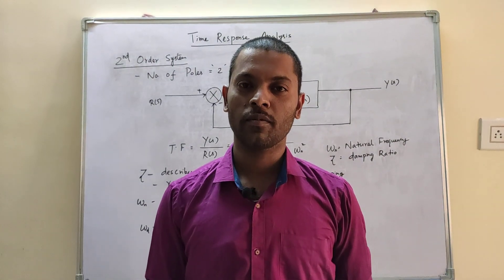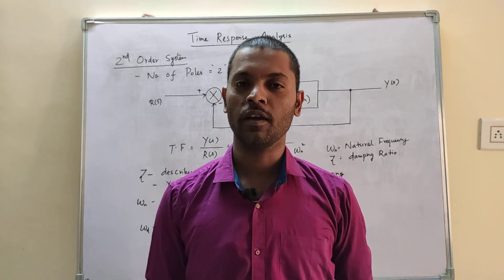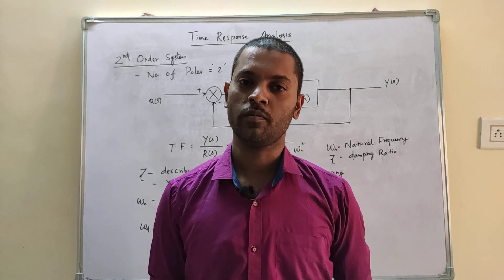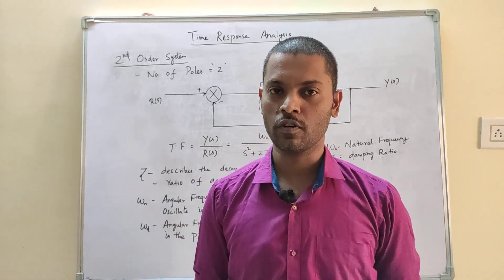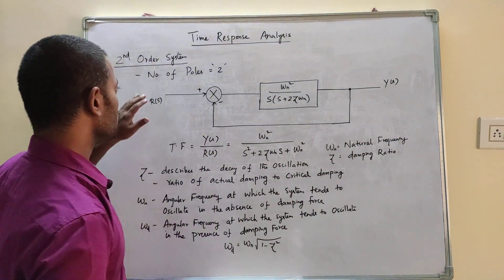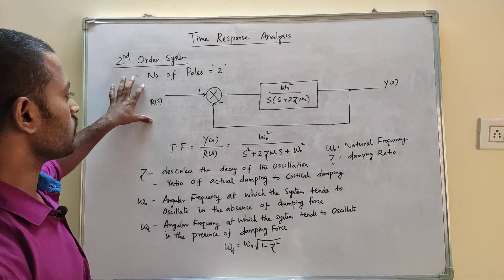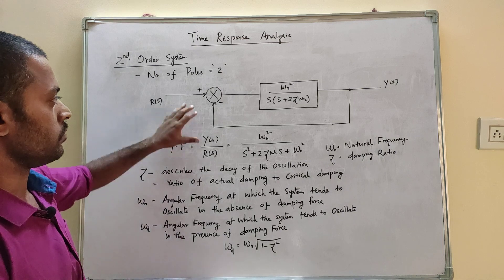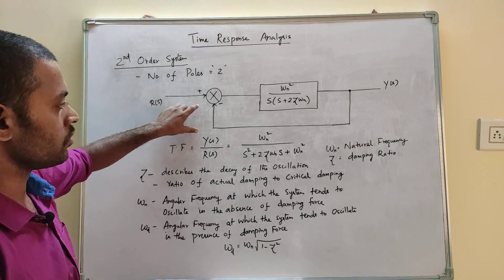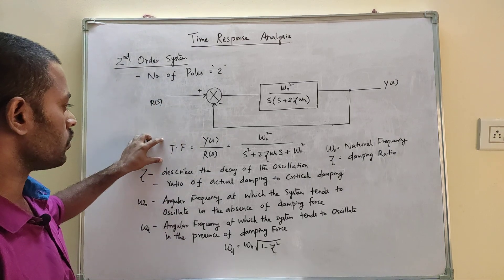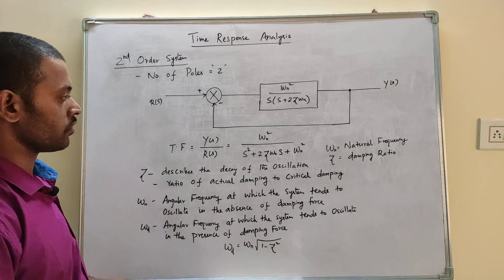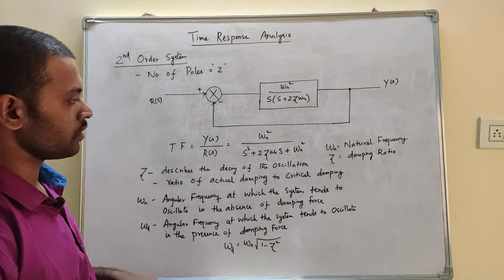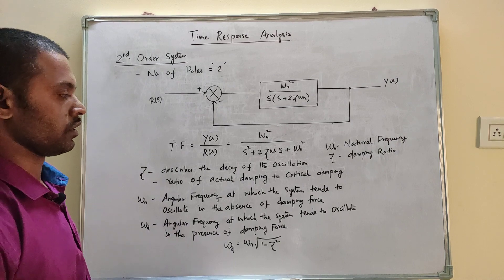Hi friends. In the time response analysis, we will analyze the second order system. The number of poles is equal to 2. For a second order system, the transfer function is equal to C(s)/R(s) = omega_n squared divided by s squared plus 2 zeta omega_n s plus omega_n squared.